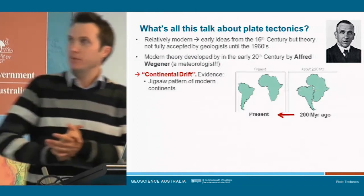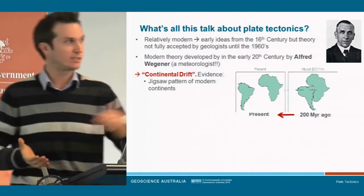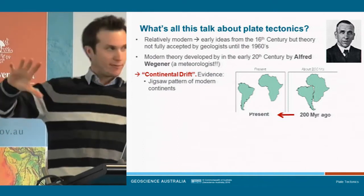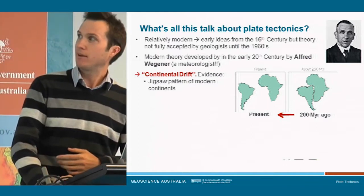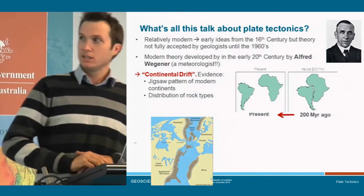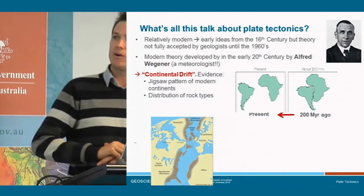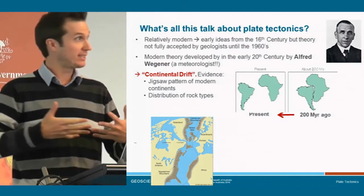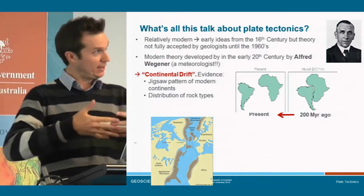Let's go through some of the evidence Wegener pulled together. The first line of evidence is that people looked at the outlines of the continents and noticed they almost look like a jigsaw — some of them seem to fit together if you move them around. South America and Africa are the best examples. People think that around 200 million years ago they fitted together and have now drifted apart. The second line of evidence is the types and ages of rocks on the edges of these continents today — a lot of them are very similar despite now being on very distant continents, suggesting they were once connected.